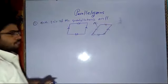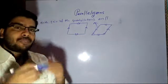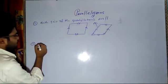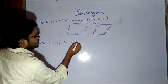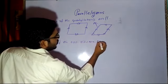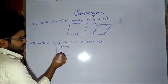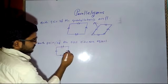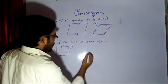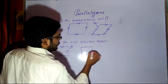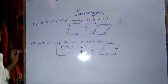The second condition is: each pair of the opposite sides are equal. If opposite sides are equal, then it is called a parallelogram. Suppose all four sides are equal, then also it is a parallelogram. If this side is equal to this side, and this side is equal to this side, it is again a parallelogram.